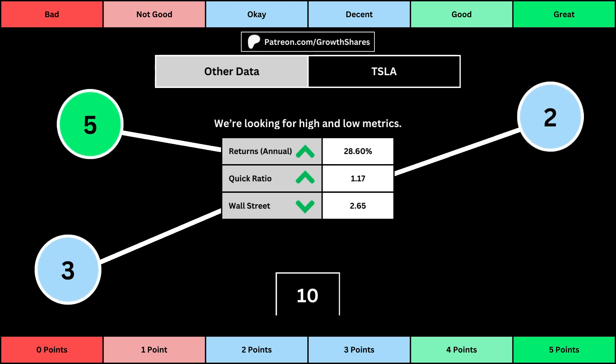The fourth set of metrics looks into other relevant data. First is the stock's performance over a set period of time — usually 10 years, but if the stock doesn't go that far back, we go with the earliest data up to 10 years. The quick ratio is basically how easy it is for the business to pay off its short-term obligations; we want that high so that it's easy to get rid of those debts. And then Wall Street is the average consensus rating Wall Street analysts give the stock, from a strong buy of 1 to a strong sell of 5. Again, the better values get a higher point total.